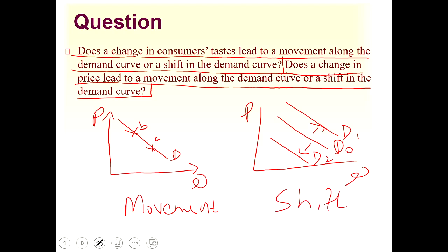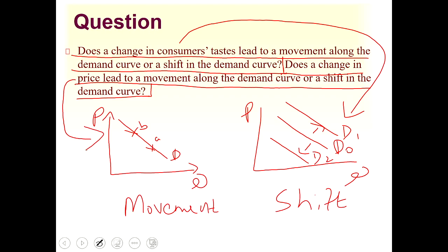So in this case, a change in consumer taste leads to a shift in the demand curve. The second part: a change in price always leads to a movement along the demand curve — for example, when price changes from P1 to P2. In the case of consumer taste, the demand curve will either shift upward or downward.